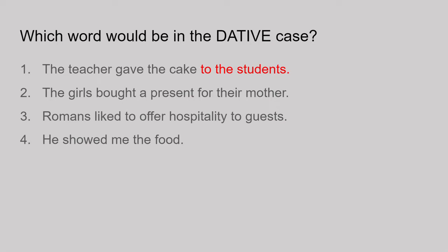They're translated using the word 'to,' so that can also help. For the second sentence: the girls bought a present for their mother. The mother is in the dative case — she is the one who will receive the gift, it is for her. The use of the word 'for' shows she's in the dative, as well as the role she's playing in the sentence. The girls are nominative, the present is the accusative, and therefore the mother must be the indirect object.